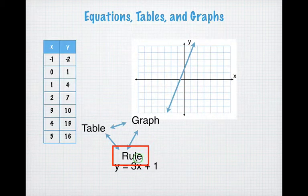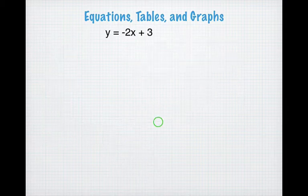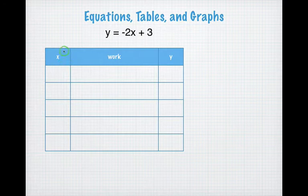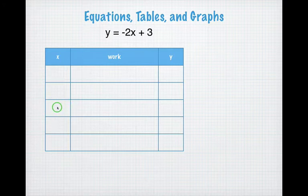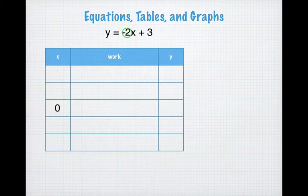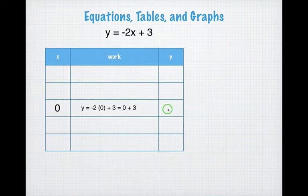We're going to move on to the last one: when you start with the rule, how do you get the table and the graph? Here's what we're starting with: y equals negative 2x plus 3. Go ahead and write that down, and then build a table — on the left is x, in the middle is the work, on the right-hand side is the y value. In the middle I'm going to start with my x value, and I always start with zero. I plug zero into the equation: y equals negative 2 times 0 plus 3. Two times 0 is 0, and 0 plus 3 is 3. So that gives me one point: (0, 3).